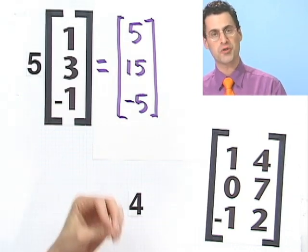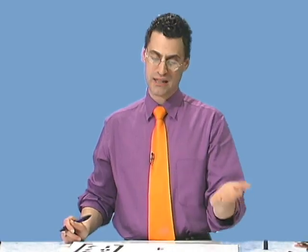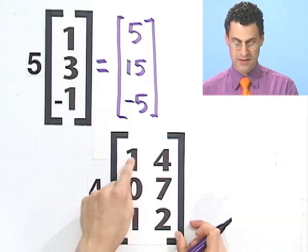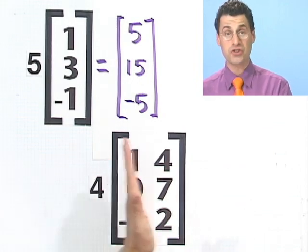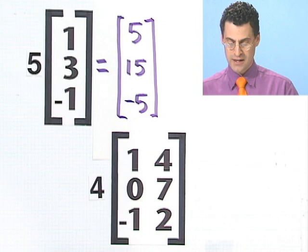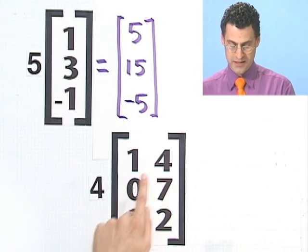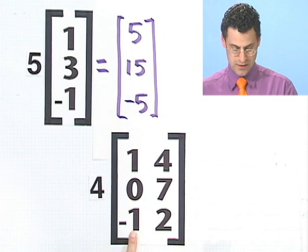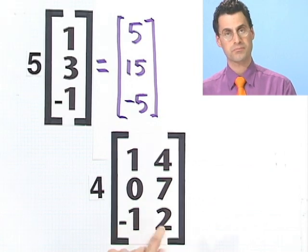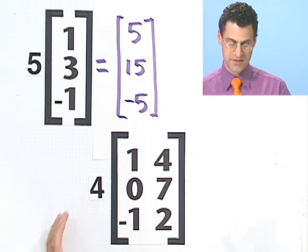So scalar multiplication of a matrix by a scalar is just literally to take that scalar and multiply every single element by that scalar. So for example, this would give you another 3 by 2 matrix. And you would get 4, 16, 0, 28, minus 4, and 8. So again, it would be the exact same size, same shape.